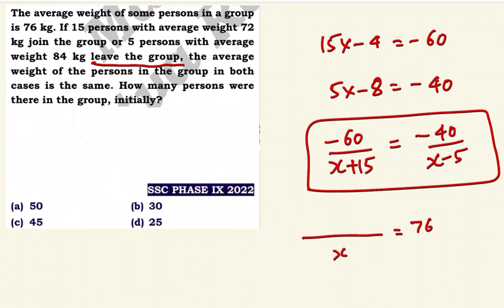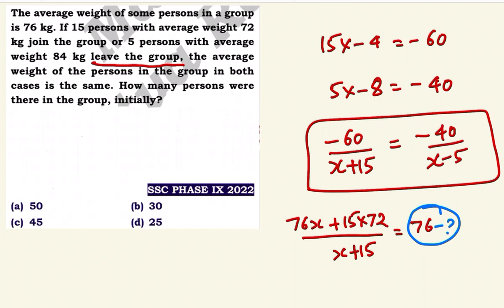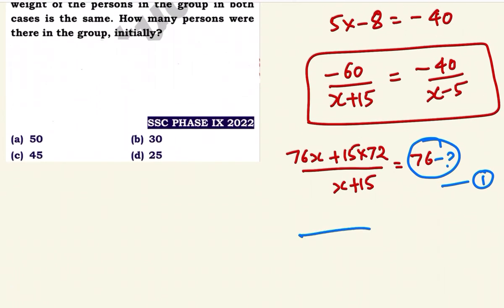The average is 76, so total weight is 76x. Plus 15 into 78 for the joining case. We can set up two equations. The two equations are both equal to the new average x.